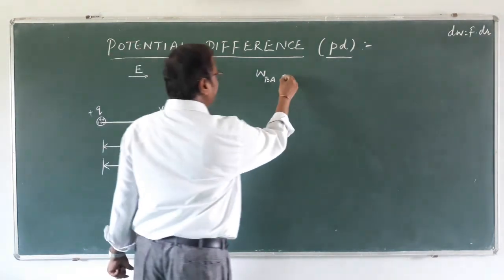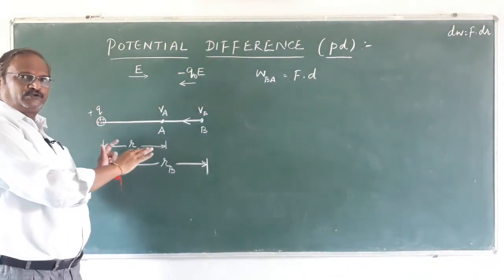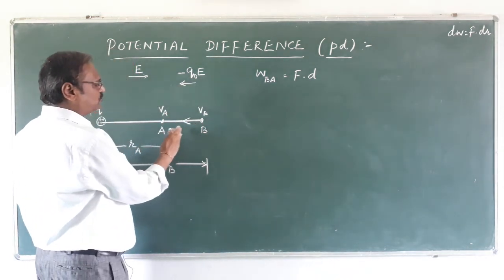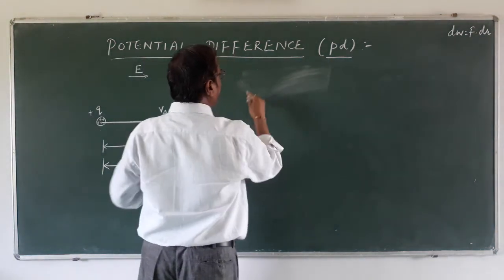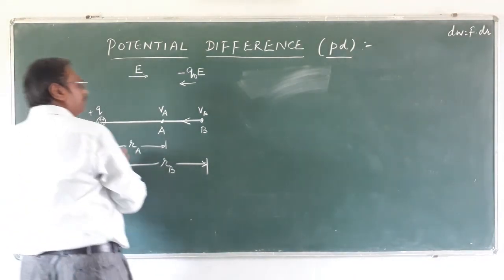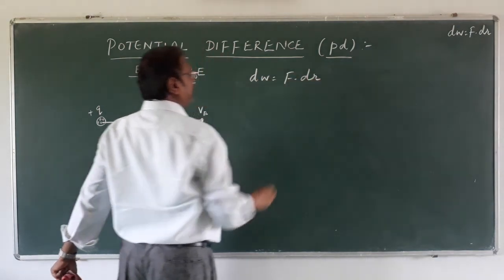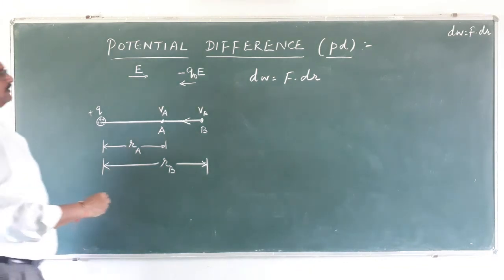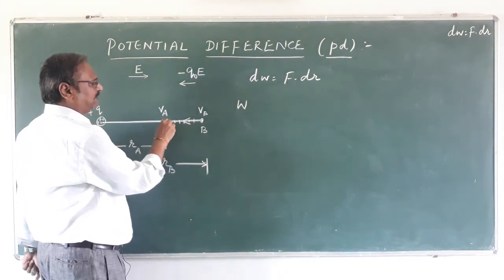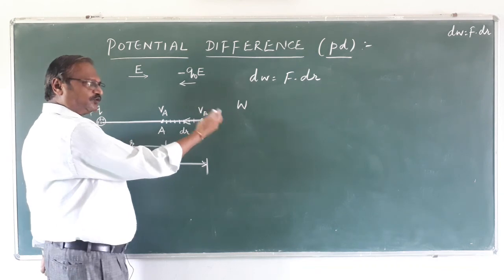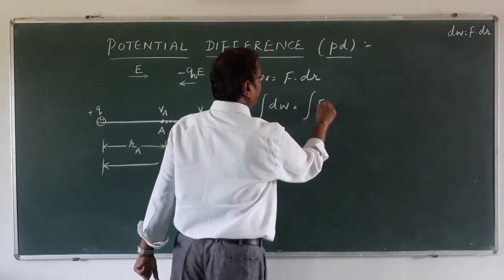We know that work done is equal to force into displacement. The force is due to the charge but displacement is going to be in small increments, so we write the formula in a modified way: dW is equal to F into dr, where dr is the small displacement. To calculate the total work done, we integrate: the integral of dW is equal to the integral of F into dr.